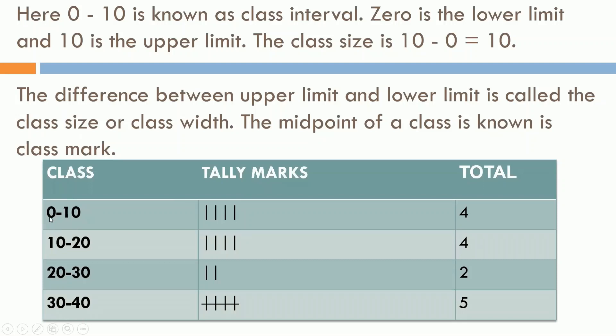Here, you can see 10 is appearing in the first class as well as in the second class. So, here in the first class, if number 10 is there, then we will put the mark in the first column. And for 11 onwards, we will be putting the marks over here. Here, 0 is called lower limit for the class and 10 is called the upper limit for this first class. If we will talk about the last one, then 30 is the lower limit and 40 is the upper limit. The difference between upper limit and lower limit is called the class size or class width. The midpoint of a class is known as its class mark.